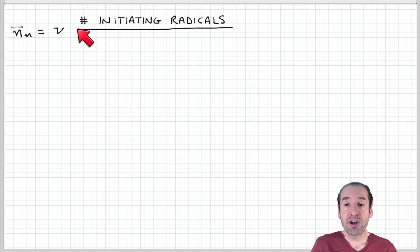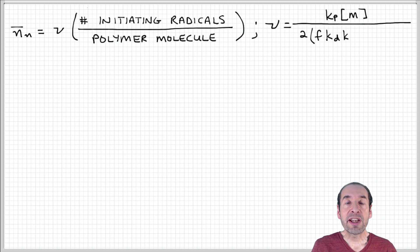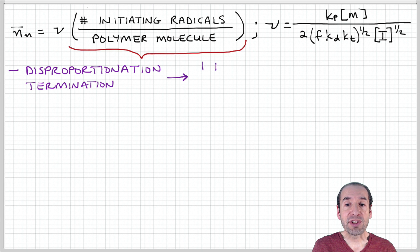We have this term number of initiating radicals per polymer molecules produced. So we need to find an expression for this part of the term. Notice that if we have disproportionation termination,